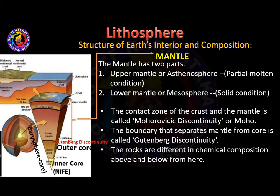The mantle has two parts: the upper mantle, which is the asthenosphere, and the lower mantle, which is the mesosphere. The contact zone between the crust and mantle is called the Mohorovičić discontinuity, or Moho. The discontinuity that separates the mantle from the core is called the Wiechert discontinuity.